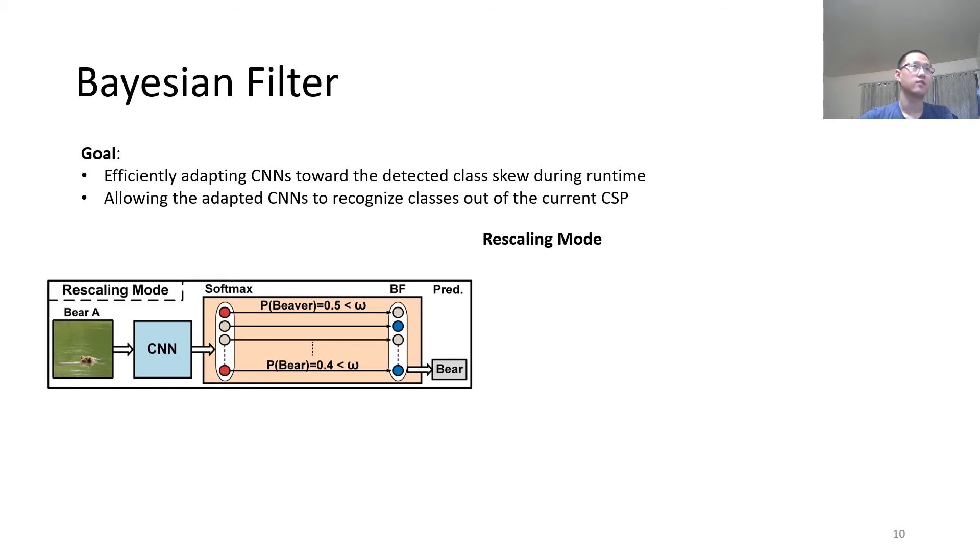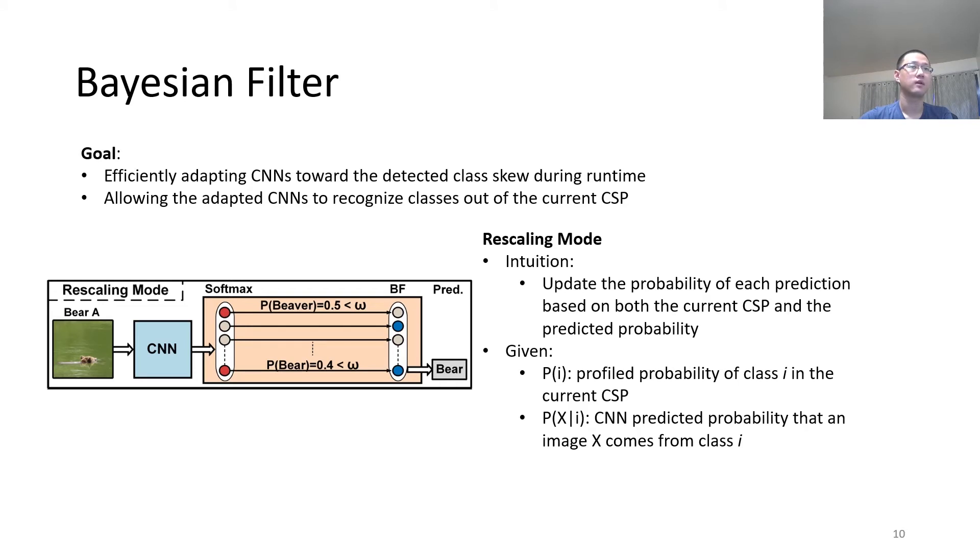The first technique is a rescaling mode. Internally, we update the probability of each prediction based on both the current CSP and the predicted probability. In particular, given the profiled probability of class i in the current class skew profiling, and the CNN predicted probability that an image comes from that class i, we generate the posterior probability.